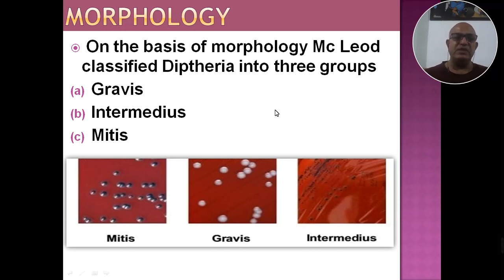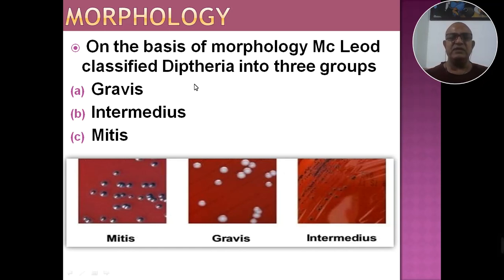On the basis of morphology, Macleod classified diphtheria into three groups: morphology के आधार पर Macleod नामक वैज्ञानिक ने diphtheria को तीन समूहों में classify किया। First form is gravis, second is intermediate, and third is mitis। इन तीनों के figure में — यह mitis का प्रतिरूप है, यह gravis का प्रतिरूप है, और यह intermediate का प्रतिरूप है।